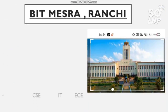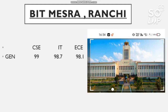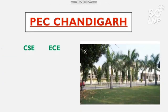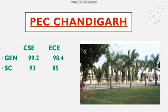The next institution is BIT Mesra, Ranchi. The cutoff for CS, IT, and EC branches: General requires 99, 98.7, and 98.1 percentile. SC requires 88, 86, and 85. ST requires 87, 86, and 82. EWS requires 98.8, 98.6, and 98. There is no reservation for OBC category in this college.